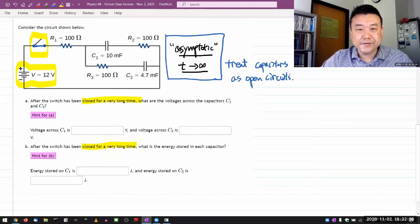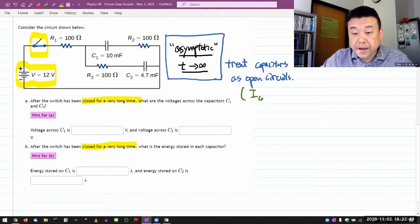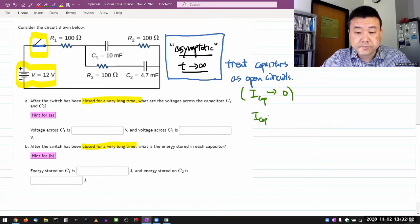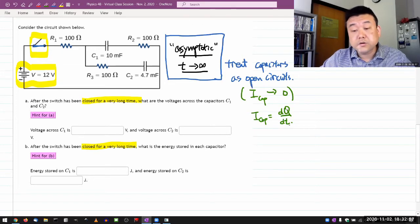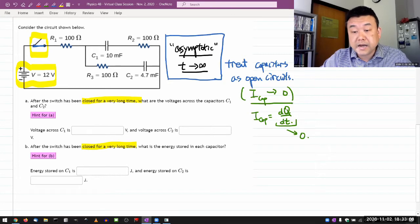Another way to put it is the current through the capacitor, you let it go to zero. This has to do with the fact that current through the capacitor is represented by the time derivative of the amount of charge on the capacitor. If the circuit has reached a steady state, then the amount of charge is no longer changing, so this derivative will be going to zero.